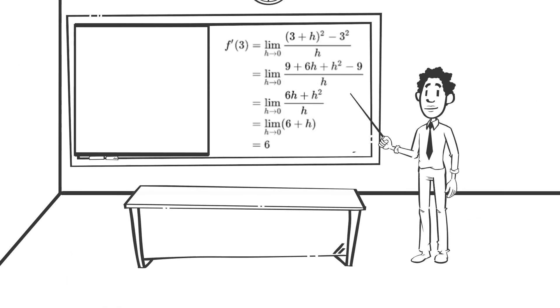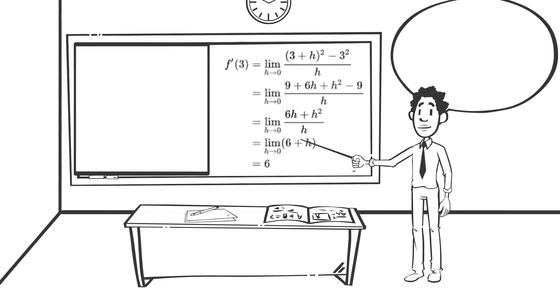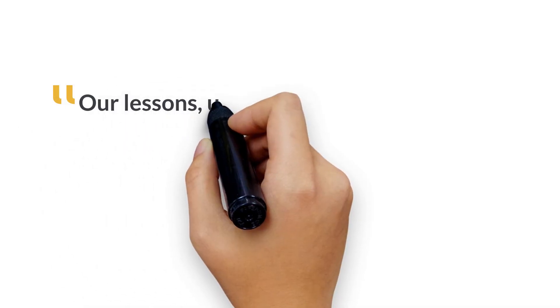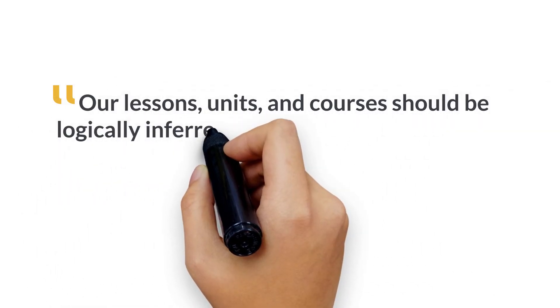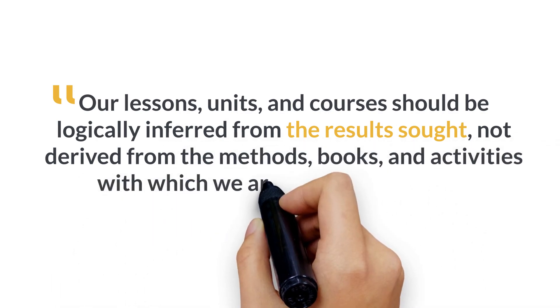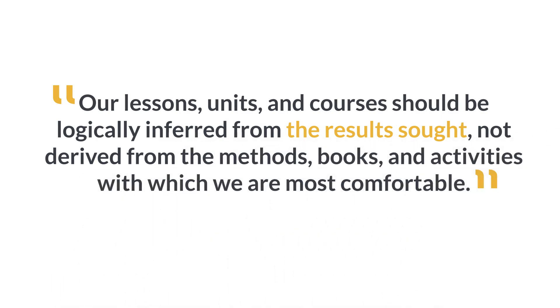In their book, Understanding by Design, Wiggins and McTighe say that when teachers are designing lessons, units, or courses, they often focus on the activities of instruction rather than the outputs of instruction. They argue that our lessons, units, and courses should be logically inferred from the results sought, not derived from the methods, books, and activities with which we are most comfortable.